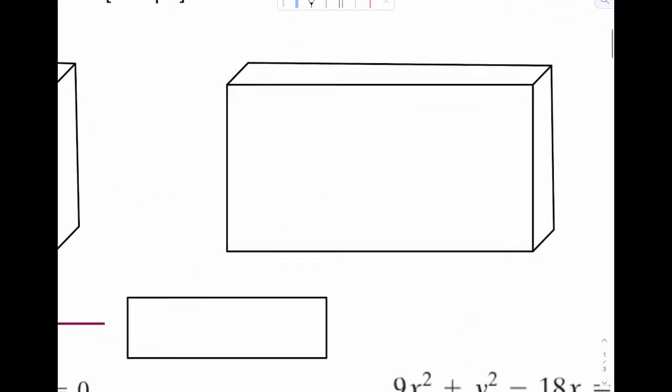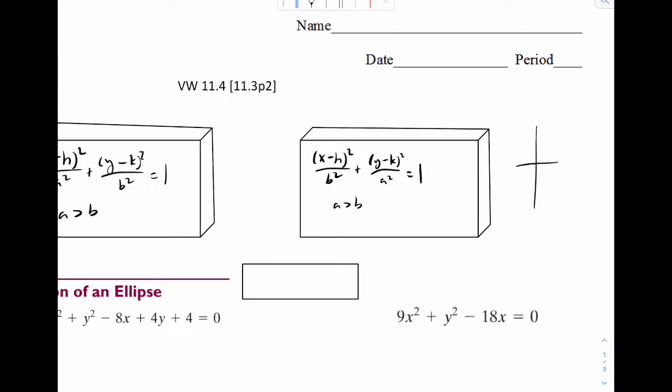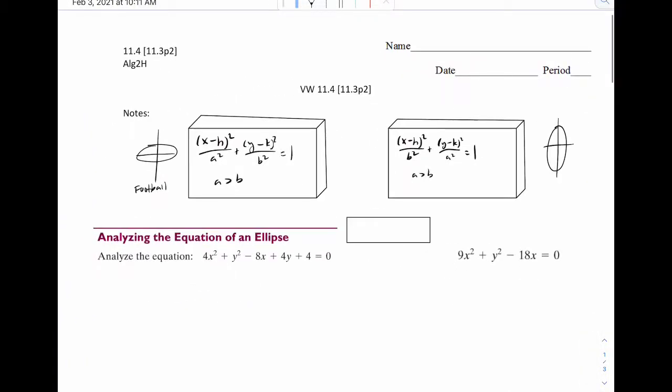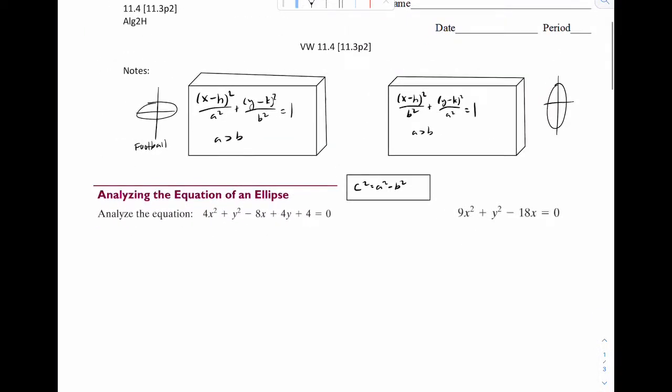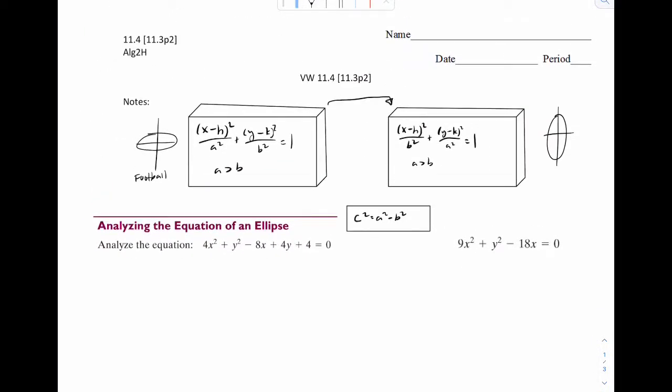And our other one is the same thing except a and b switch. Remember this is our corn form. And of course the thing that ties it all together, c squared is equal to a squared minus b squared. And for reference we're going to call these two things standard conic form. So for all our conics there's a standard conic form meaning the form we want to work in. And for ellipses this is what we want to see.